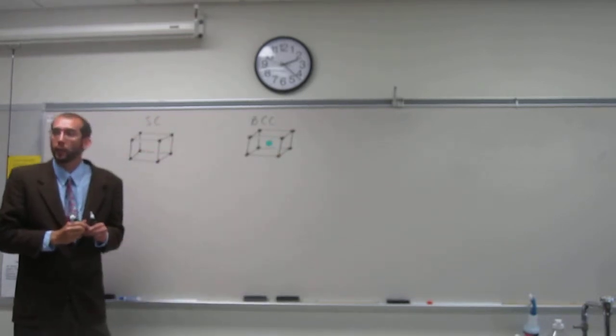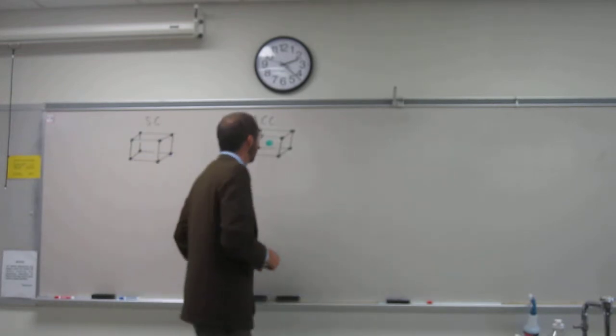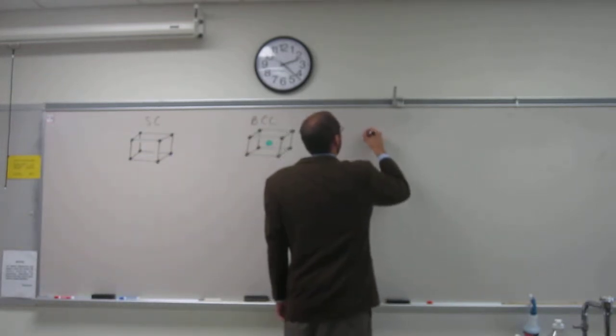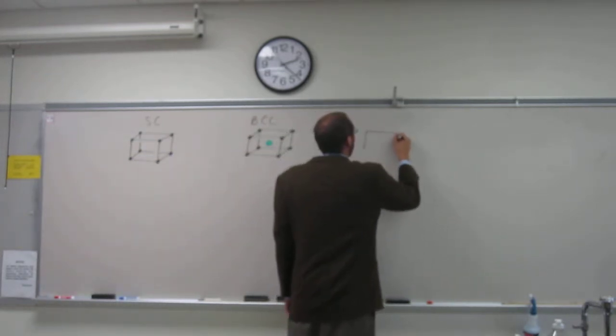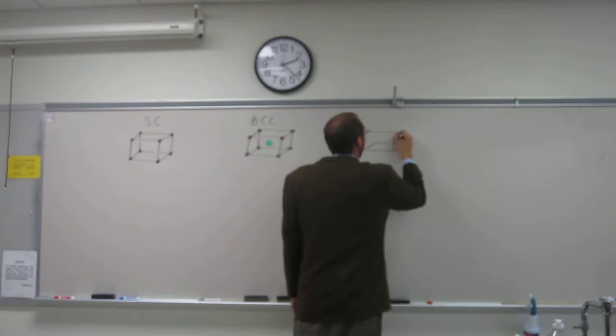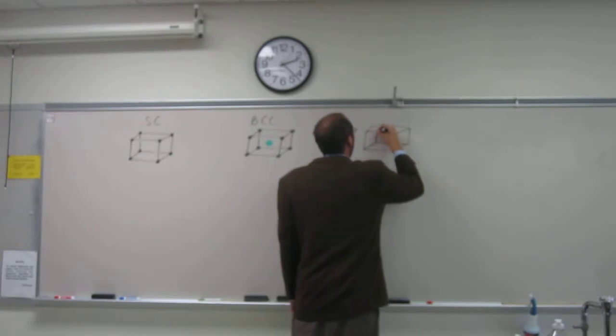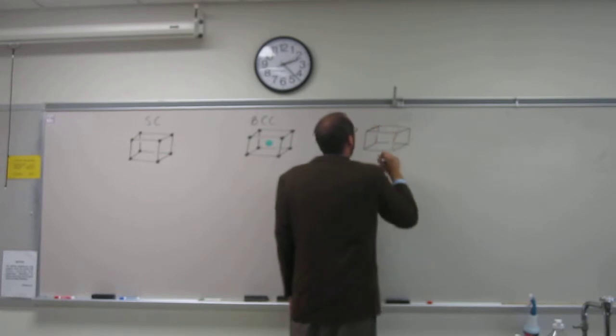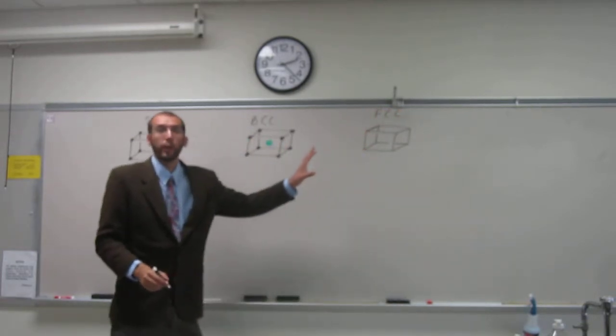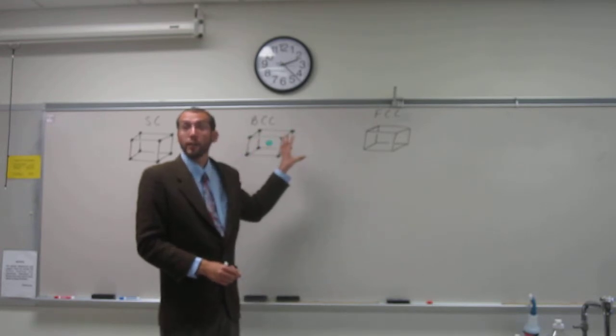For the face-centered cubic, we again have one, two, three, four, five, six, seven, eight corner atoms—the face-centered cubic has the same eight corners as the simple cubic.